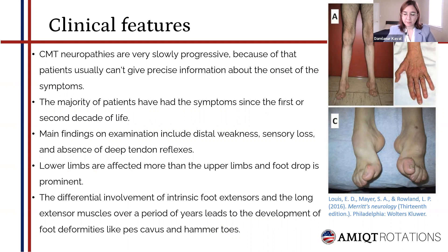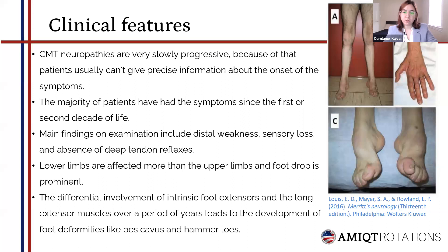CMT neuropathies are slowly progressive — because of that, patients usually can't give precise information about onset of symptoms. The majority of patients have had symptoms since the first or second decade of life. Main findings on examination include distal weakness, sensory loss, and absence of deep tendon reflexes. Lower limbs are affected more than upper limbs and foot drop is prominent. The inverted champagne bottle sign is visible due to distal muscles being more affected than proximal muscles. The differential involvement of intrinsic foot extensors and long extensor muscles leads to foot deformities like pescavus and hammer toes. Atrophy of intrinsic hand muscles may also be seen.